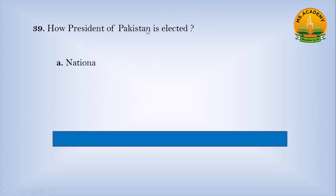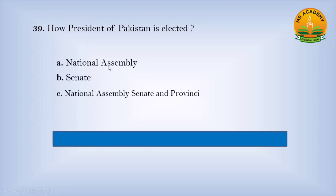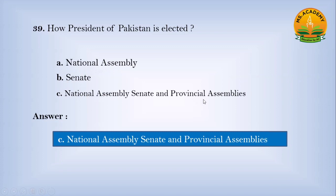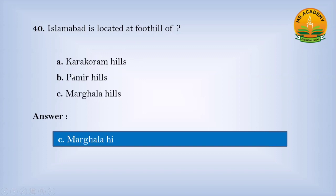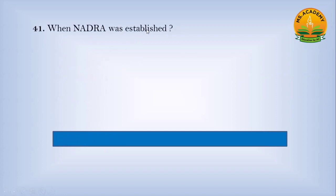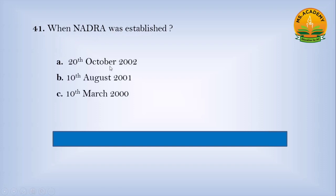How is the President of Pakistan elected? Option A, through National Assembly; Option B, through Senate; Option C, through National Assembly, Senate, and Provincial Assembly. Answer: C — National Assembly, Senate, and Provincial Assembly. Islamabad is located at the foot of: Option A, Karakoram Hills; Option B, Pamir Hills; Option C, Margalla Hills. Answer: C — Margalla Hills. When was NADRA established? Option A, 10th August 2001; Option C, 10th March 2000. Answer: C — 10th March 2000.